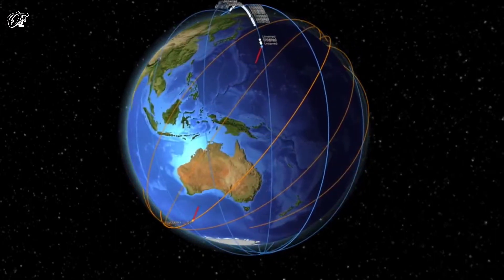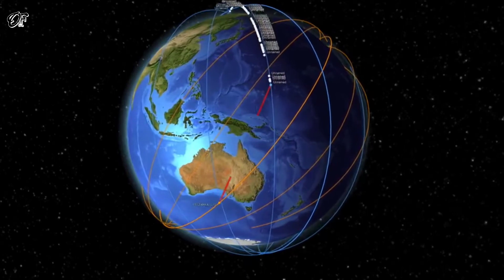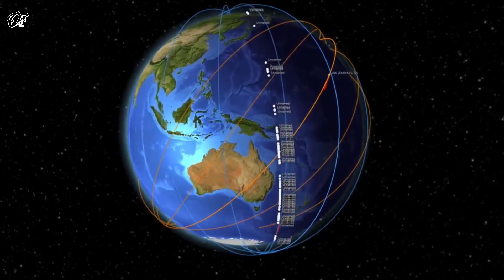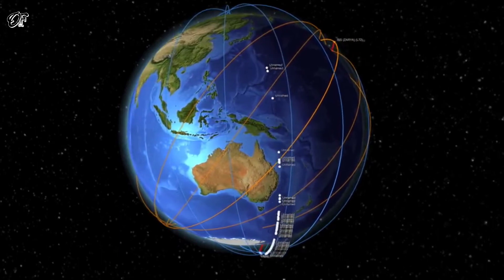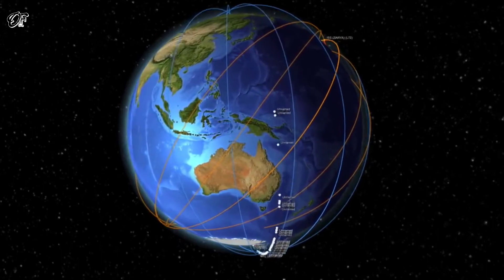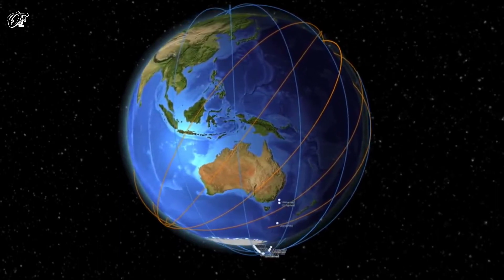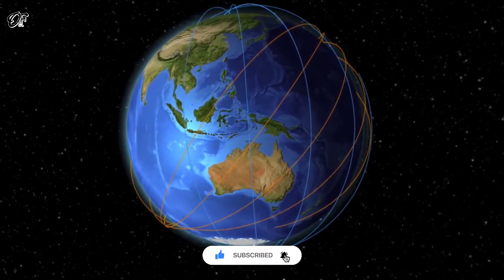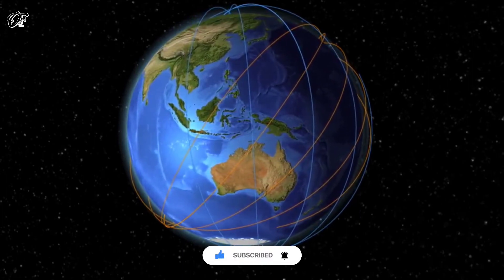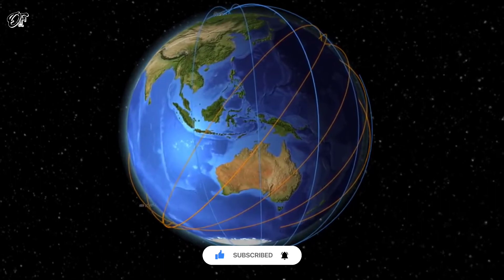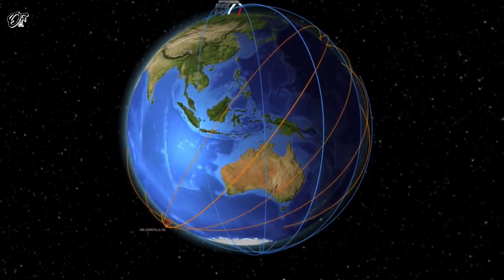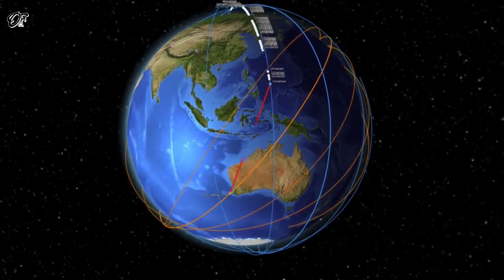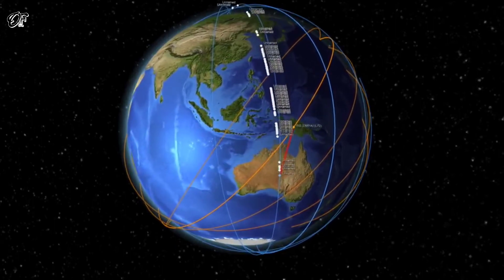These satellites are initially deployed at a lower altitude and in close proximity to one another. In the days and weeks following deployment, they use their onboard propulsion to slowly boost themselves to a higher altitude of 550 kilometers while spreading out along their orbital plane. Above you can see a recently launched grouping of Starlink satellites still moving together as a pack, as well as some earlier launched groupings that have already boosted upwards and been spread out along their orbital plane.